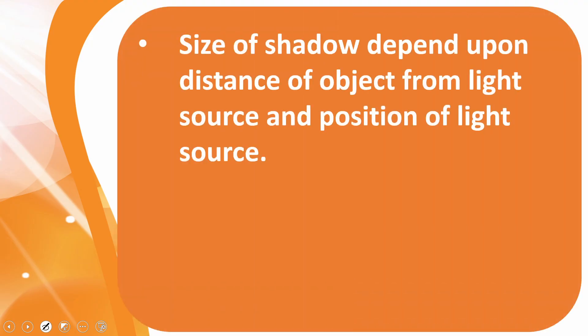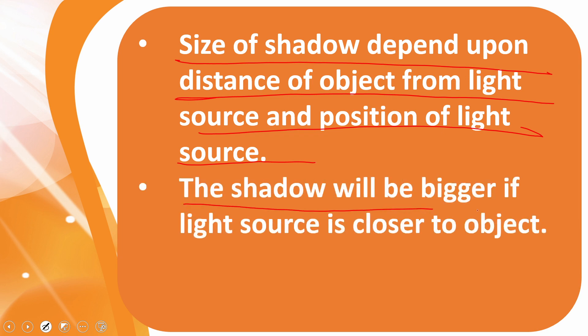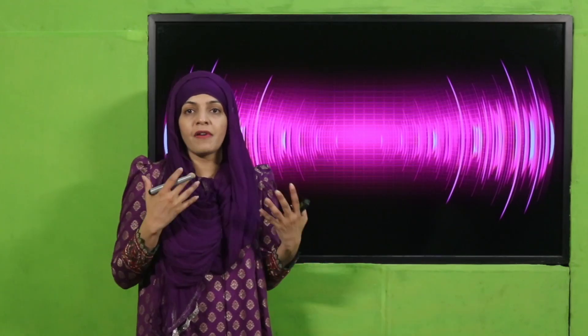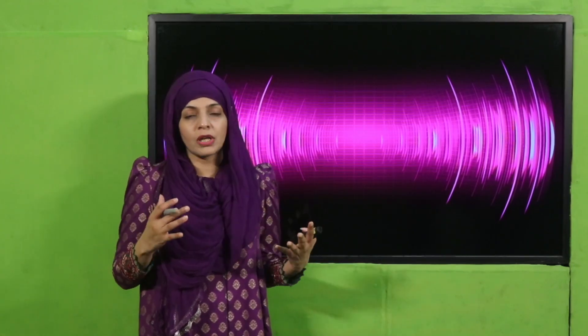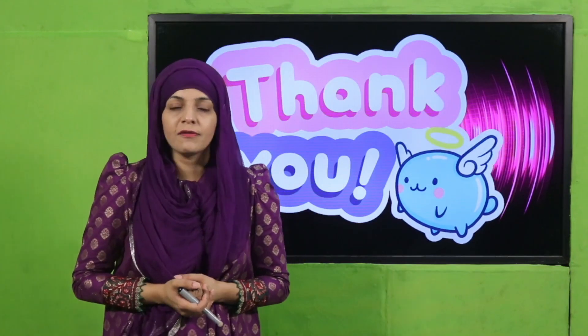Now let's wrap up. Today we learned that the size of shadows depends upon the distance of the object from the light source and the position of the light source. The shadow will be bigger if the source is closer to the object. The shape and size of the shadow are affected by the position and distance of the light source. Keep everybody around you safe, have a good day, thank you so much.